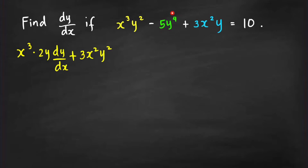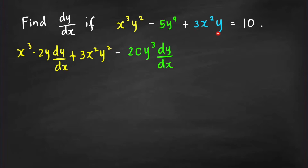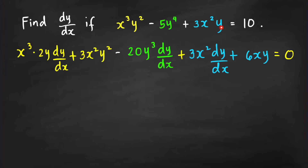The derivative of the second term, −5y⁴, uses the chain rule (extended power rule), giving us −20y³ times dy/dx. For the third term, 3x²y, applying the product rule gives 3x² times dy/dx plus y times the derivative of 3x², which is 6x.